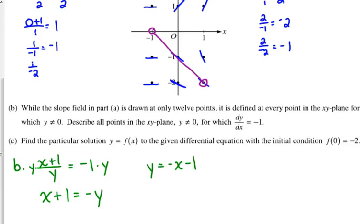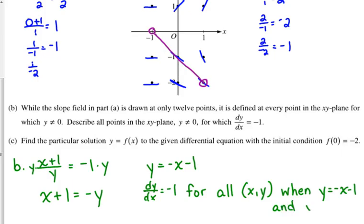They wrote it in words: dy/dx is equal to negative 1 for all (x, y) when y equals negative x minus 1 and y is not equal to 0.